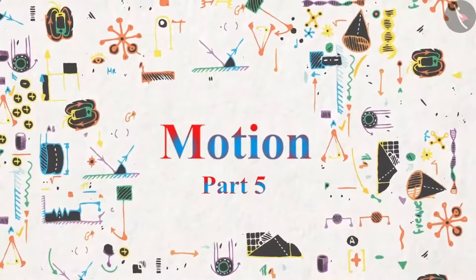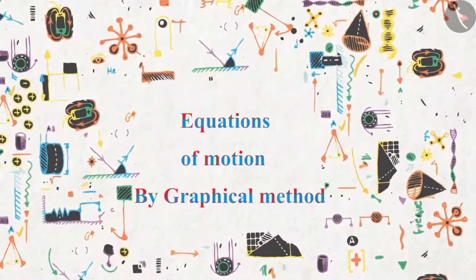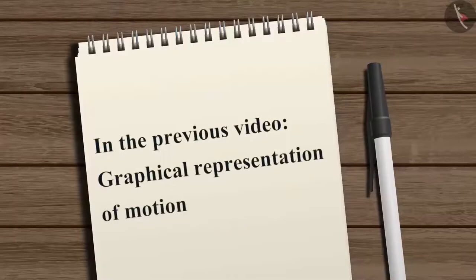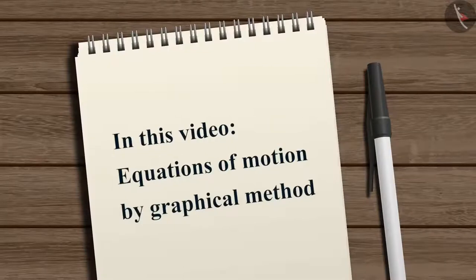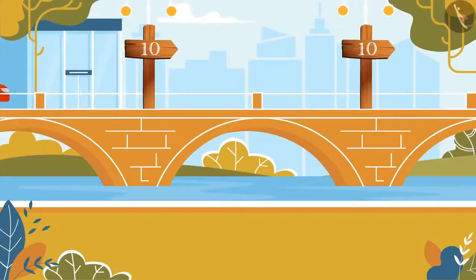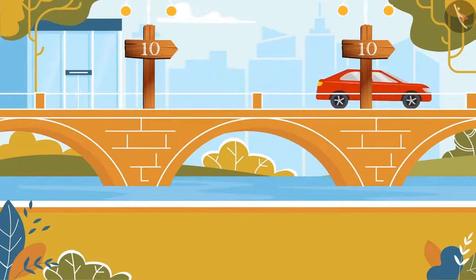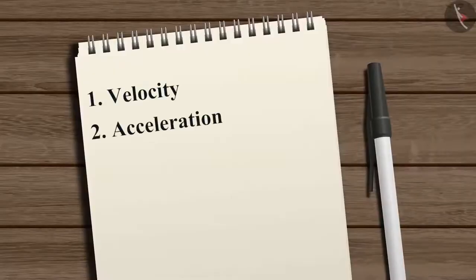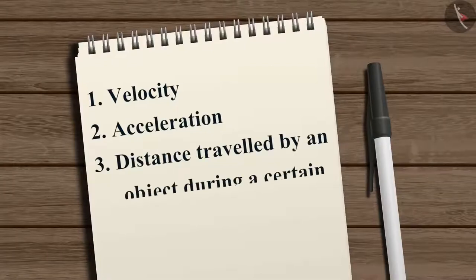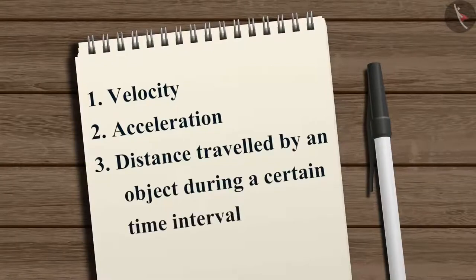Motion part 5: equations of motion by graphical method. In the previous video we learned about graphical representation of motion. In this video we will learn to represent the equations of motion by graphical method. Earlier we have studied the motion of an object along a straight line in uniform velocity. Now let us see how velocity, acceleration during motion, and distance traveled by an object during a certain time interval can be related using a set of equations called equations of motion.